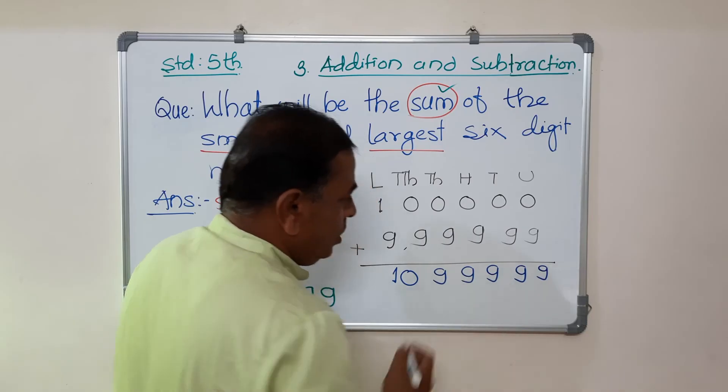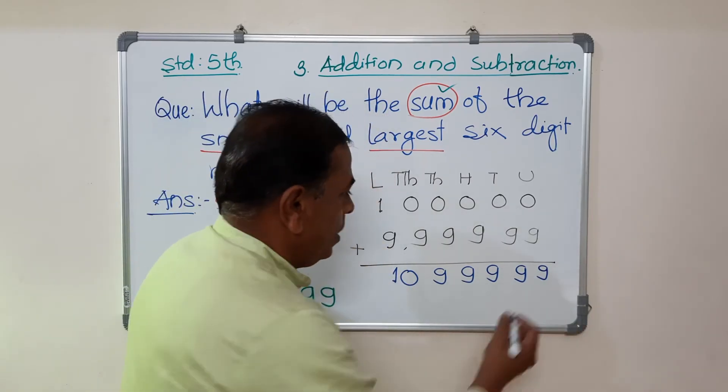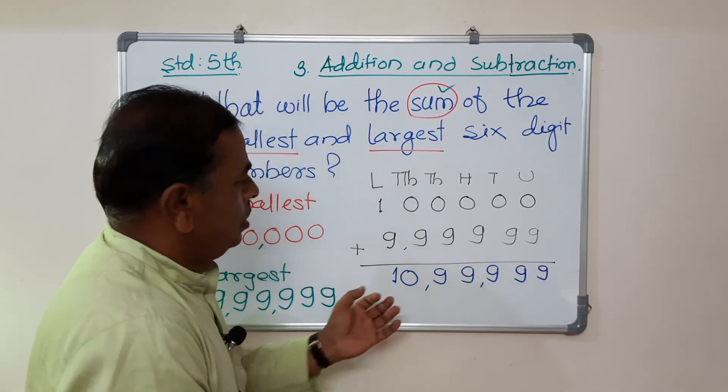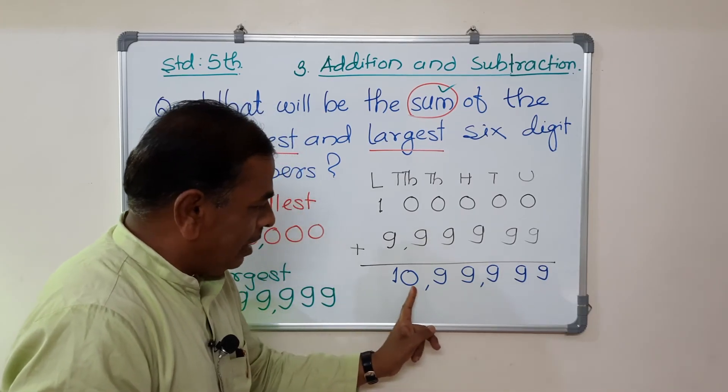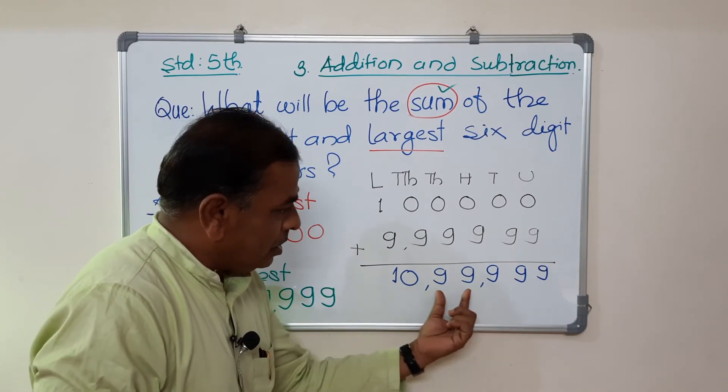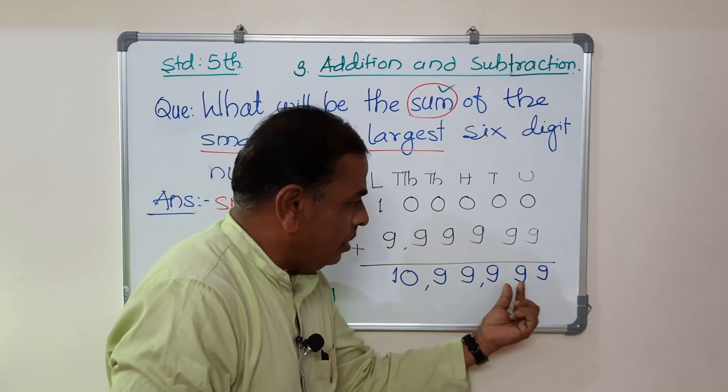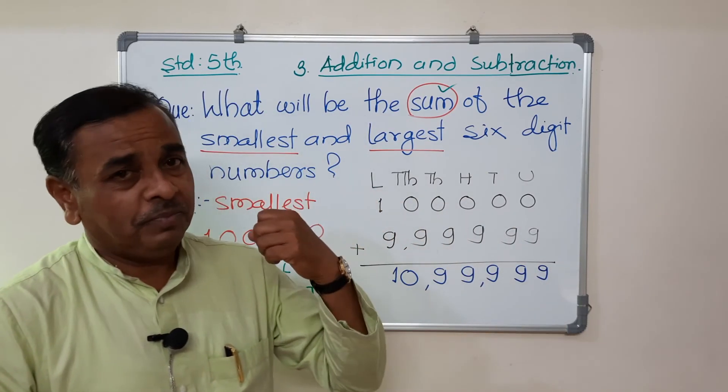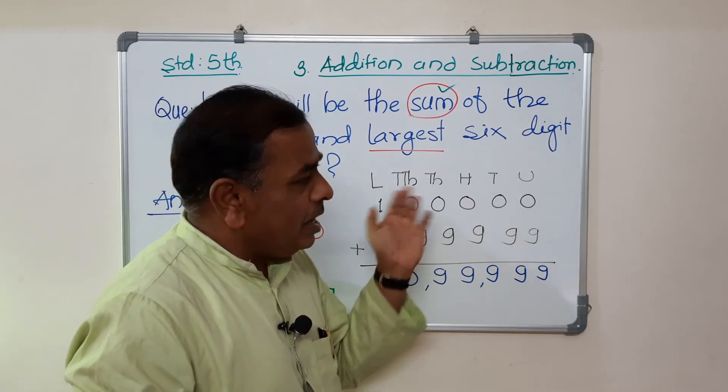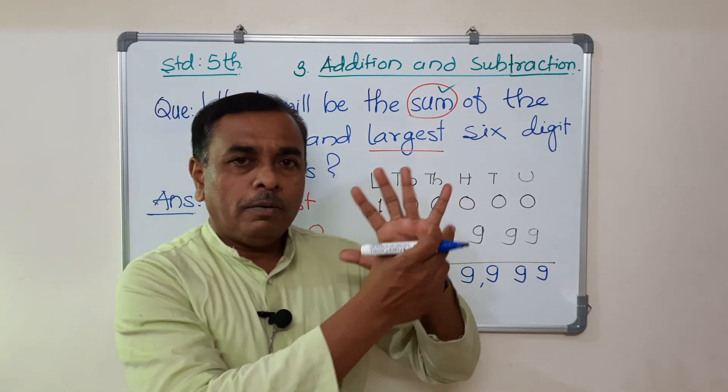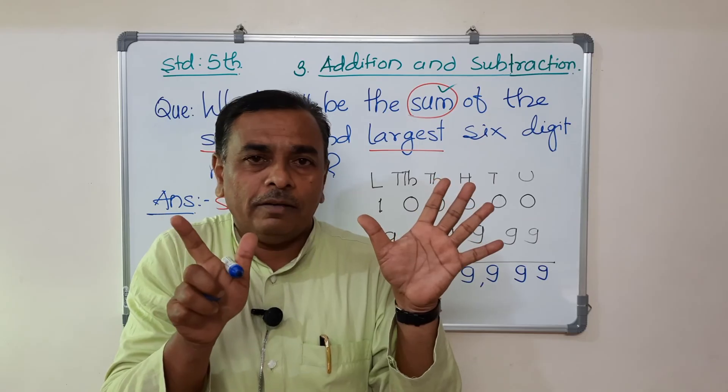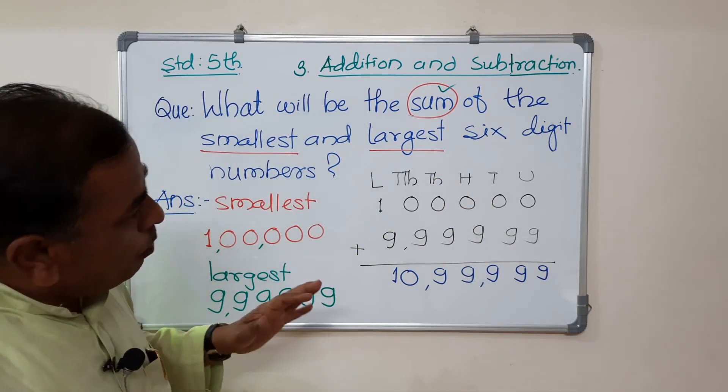Now we count: 1, 2. Unit, 10, 100, 1000, 10,000, lakh, 10 lakh. The number is 10 lakh, 99,999. It's very easy.